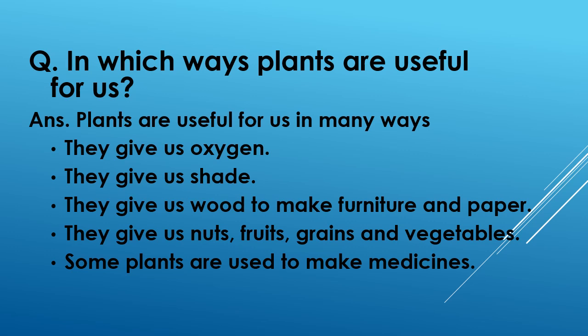In which ways are plants useful for us? Plants are useful for us in many ways. They give us oxygen, they give us shade, they give us wood to make furniture and paper. They give us nuts, fruits, grains and vegetables. Some plants are also used to make medicines.